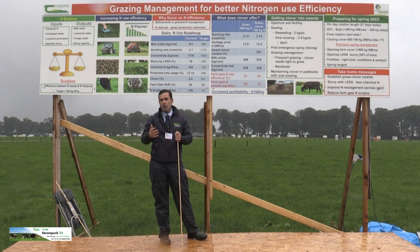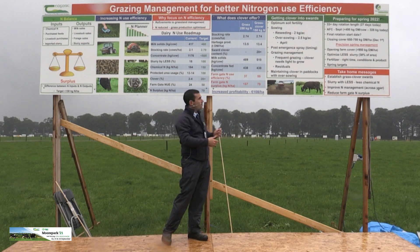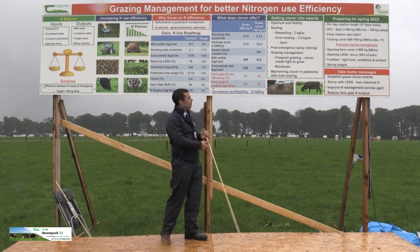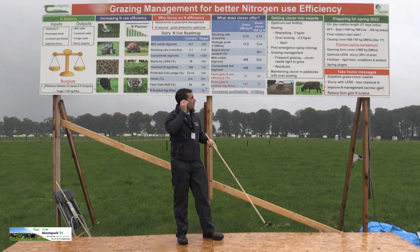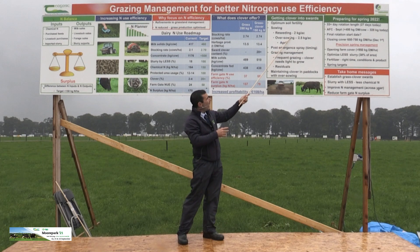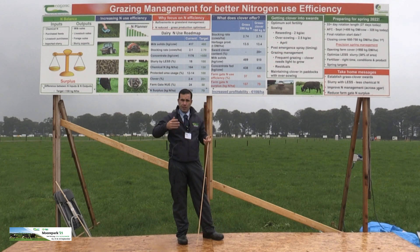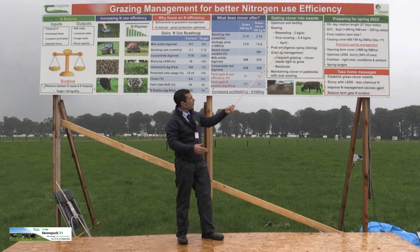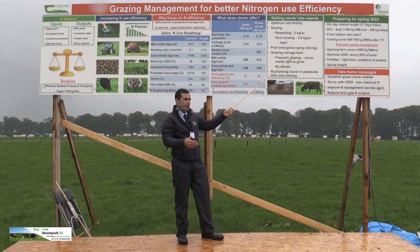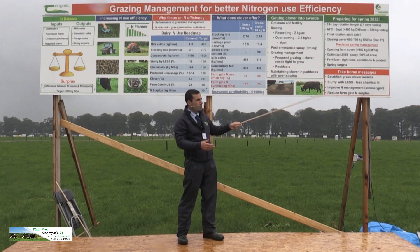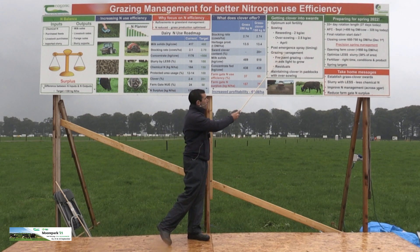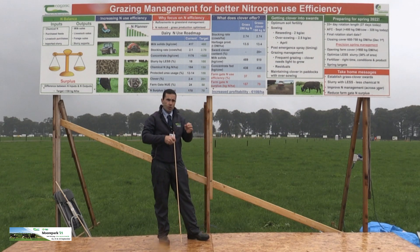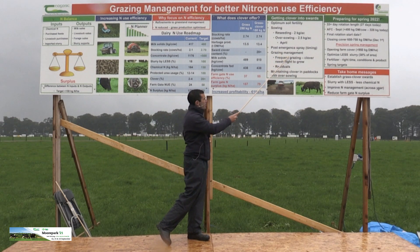There are two methods for including clover in swards: full reseed and oversowing. The best chance of getting a good clover sward established is a full reseed — less competition from grass and weeds makes it easier. For sowing, we're talking about 1.5 to 2 kilos per acre of clover included in the seed mix, and ideally a spring reseed is much better. For oversowing, earlier in the year — April/May — is best; past mid-May it gets too dry, so increase the seeding rate to 2.5 kg/acre. A critical step is getting the post-emergence spray right at the correct timing to control docks and thistles.